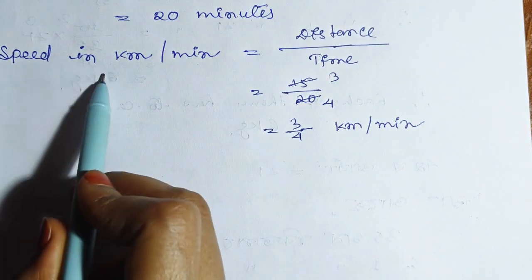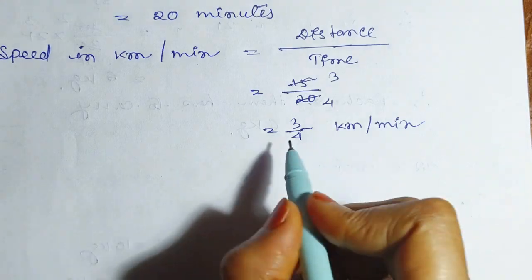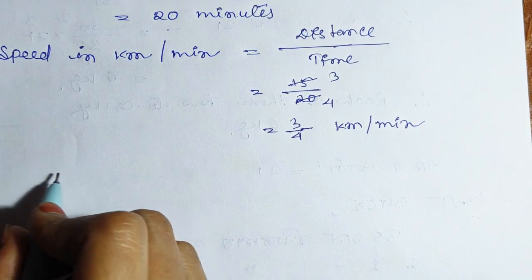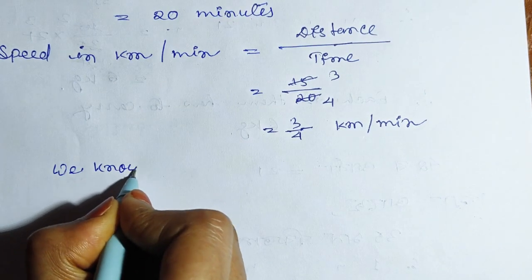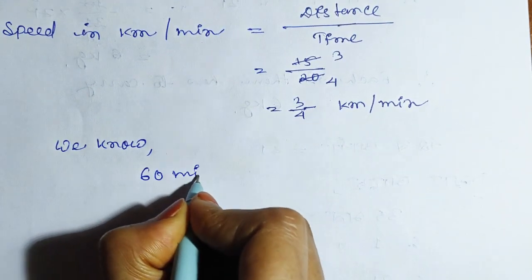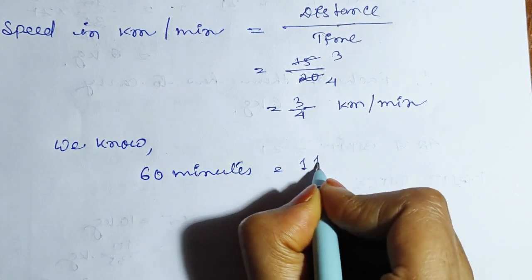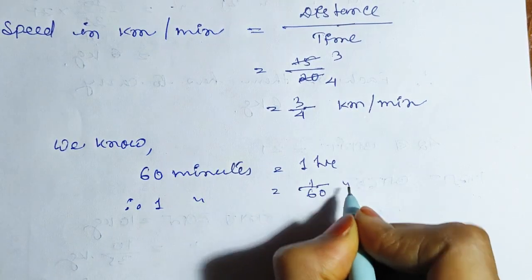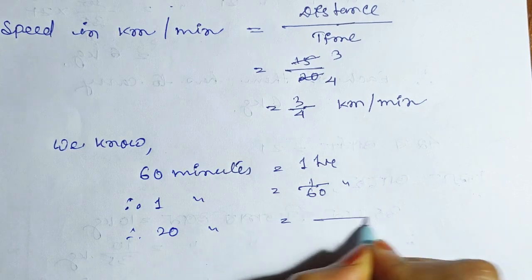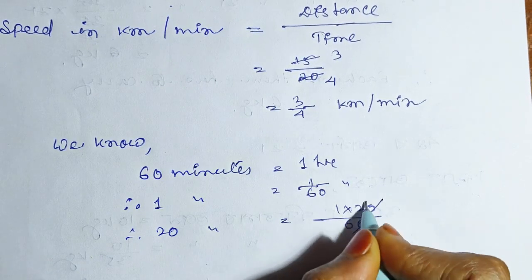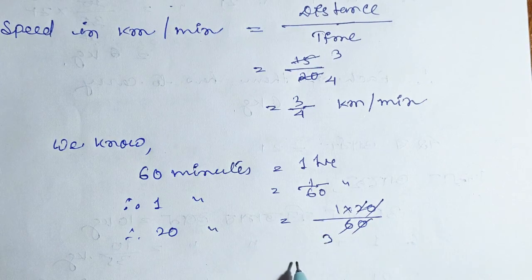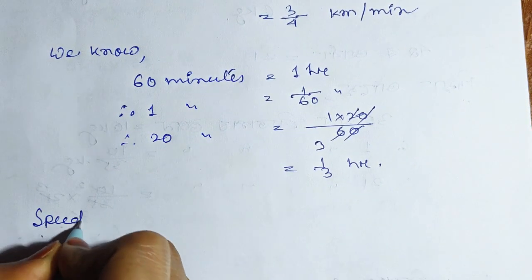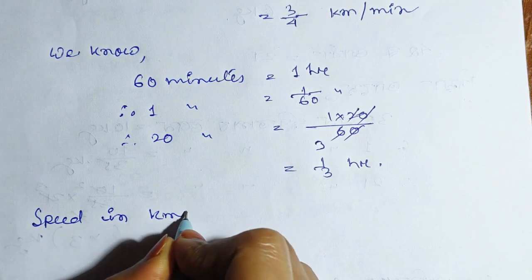Speed in km per hour: we know 60 minutes equals 1 hour, therefore 1 minute equals 1/60 hour. So 20 minutes equals 20/60, which is 1/3 hour. Speed in km per hour equals distance divided by time.